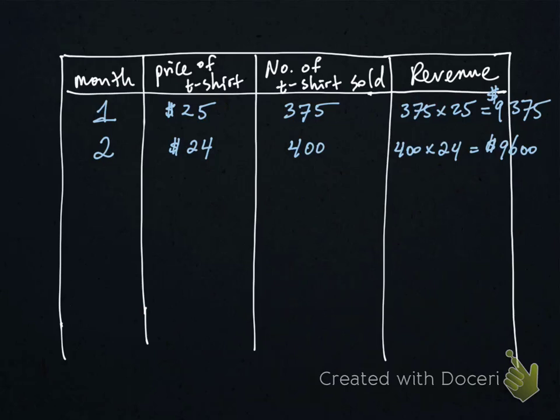So you continue with that pattern of decreasing by another dollar during month three. And you ended up selling 25 more t-shirts than the previous month at 425. The revenue is even better this time at $9,775.